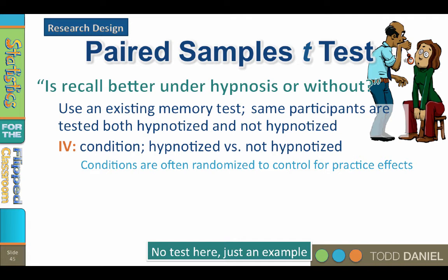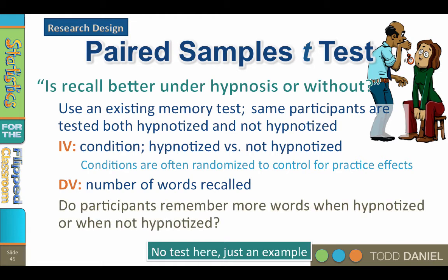We may become concerned about practice effects. If we test everyone without hypnosis first and then again under hypnosis, some of the reason for improved performance might be that they had a chance to practice on the first trial. In order to control for practice effects, we would randomly assign people to participate in either the hypnosis or non-hypnosis condition in a random order. So roughly half of our sample was hypnotized during the first trial while the remainder were hypnotized during the second trial, which should cancel out any practice effects. The dependent variable is memory — the number of words recalled. We may find that the mean for one condition was higher, allowing us to tell whether hypnosis affects memory.